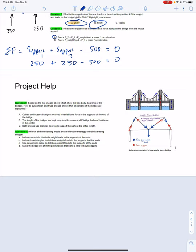Based on the two images above showing the free body diagrams of the bridge, how do suspension and truss bridges ensure that all portions of the bridge are supported? Suspension does not use triangles, and the length of the bridge for suspension tends to be very long, so the answer must be A by default.